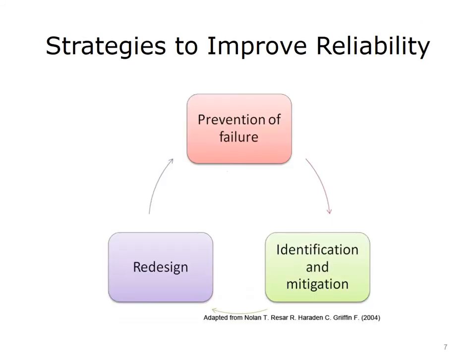To compensate for human limitations, the IHI framework employs a three-tiered strategy. The first line of defense is to prevent the failure from occurring in the first place. The second is to identify and mitigate failure. The last step is to redesign the system.